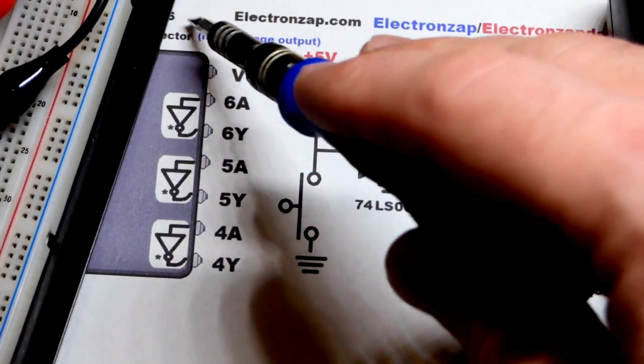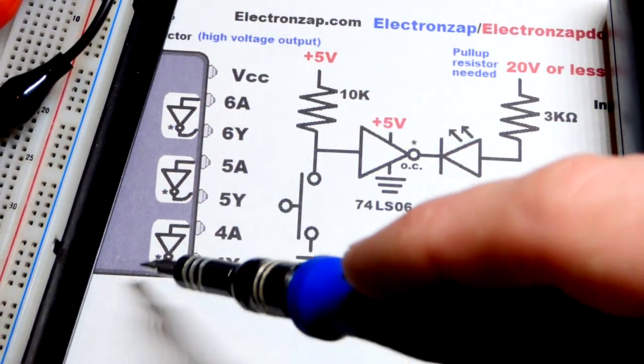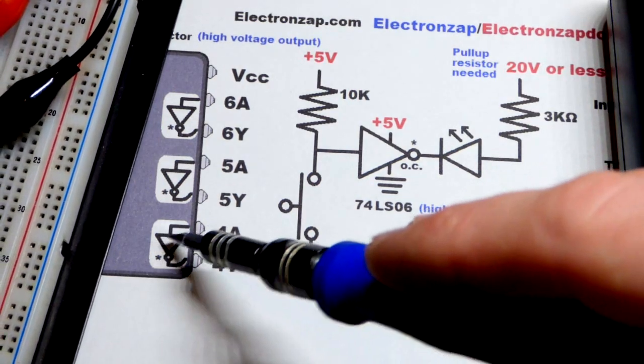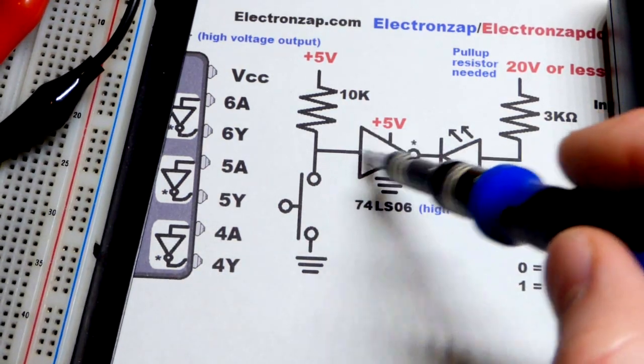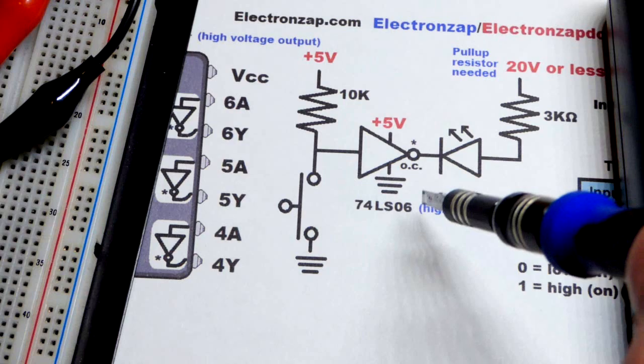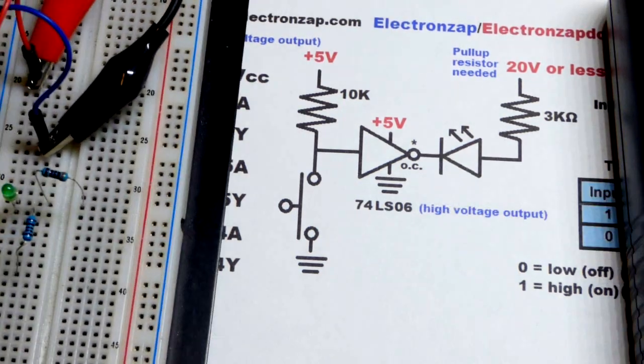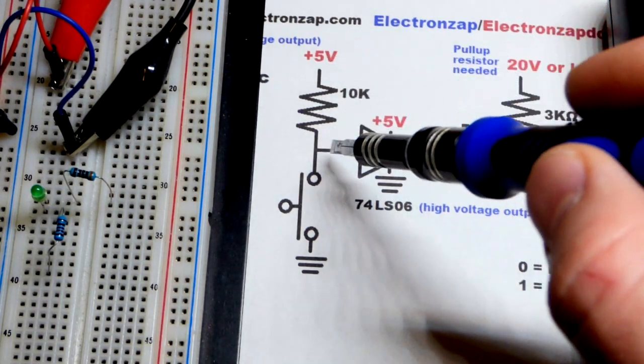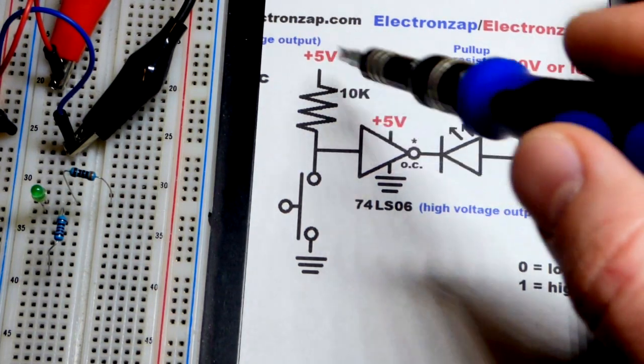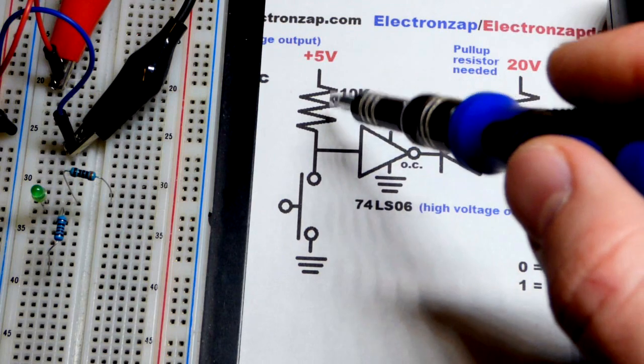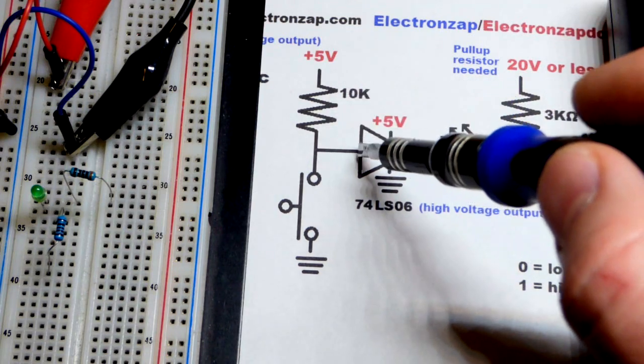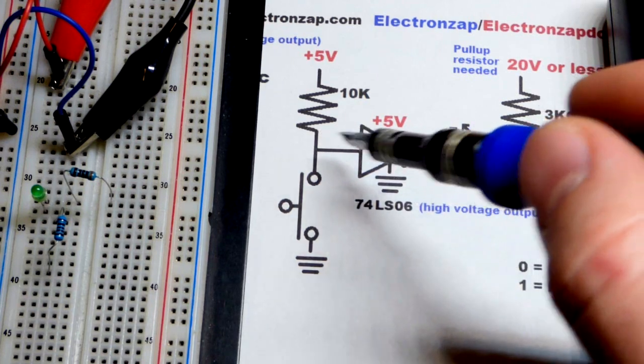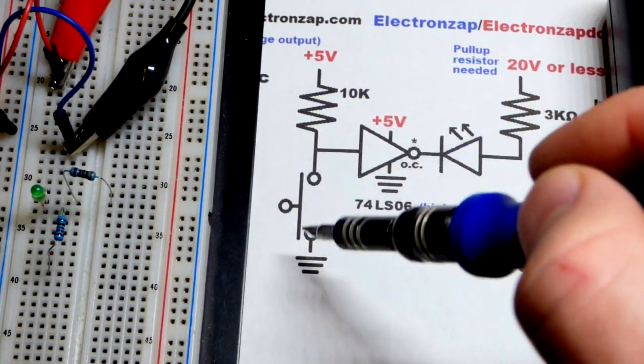There's a little star there. That indicates that it's an open collector. If it's a CMOS integrated circuit, then it's an open drain. There's also a diamond symbol with a line underneath it that I see to indicate that is an open collector or an open drain. But here you can see at the 5 volt supply, we have a 10 kilo ohm. That value doesn't really matter too much. It should be higher value though. 10 kilo ohm to the input. So that second pin down.